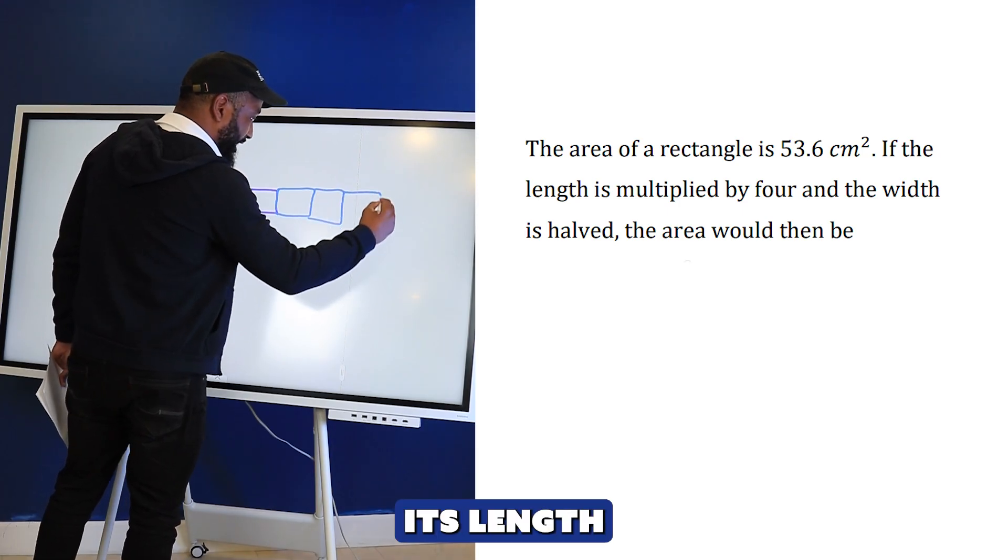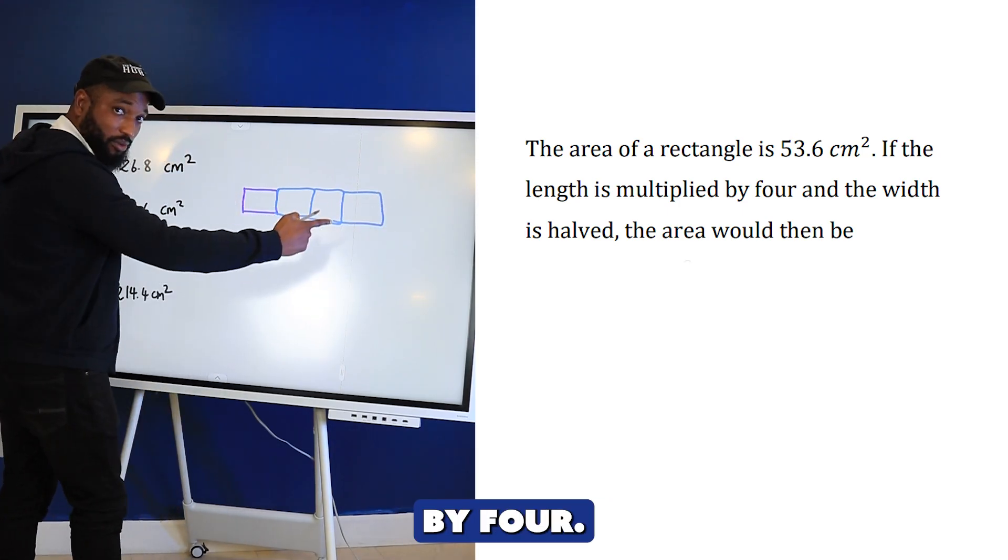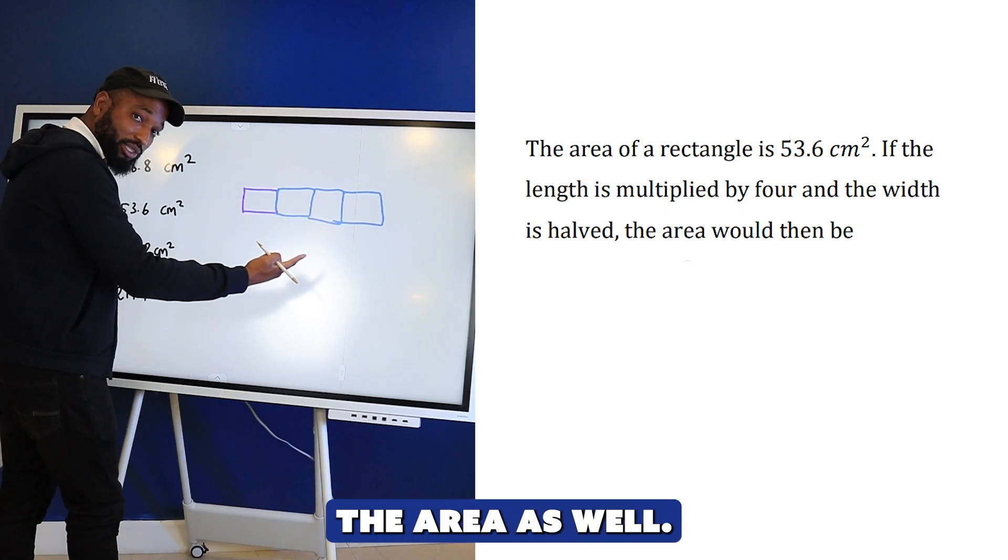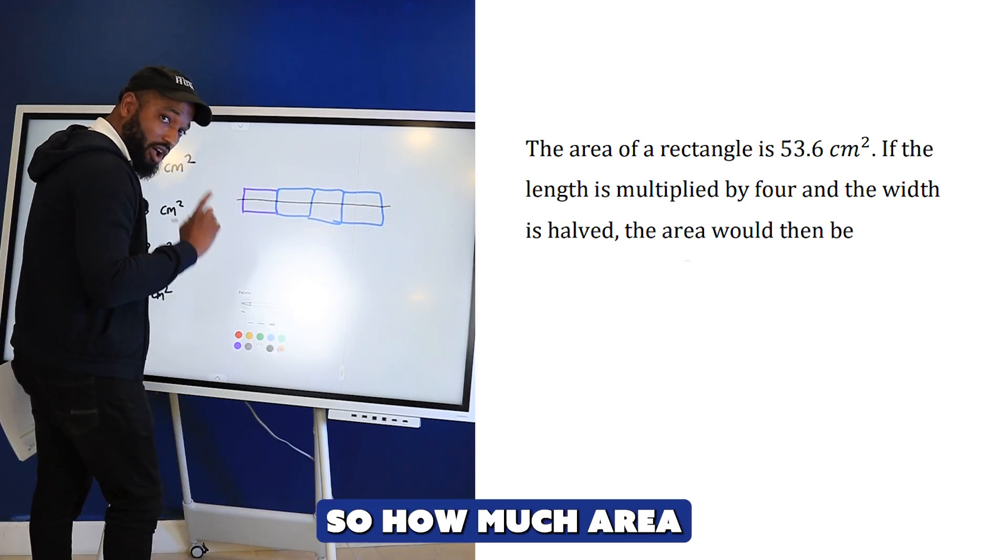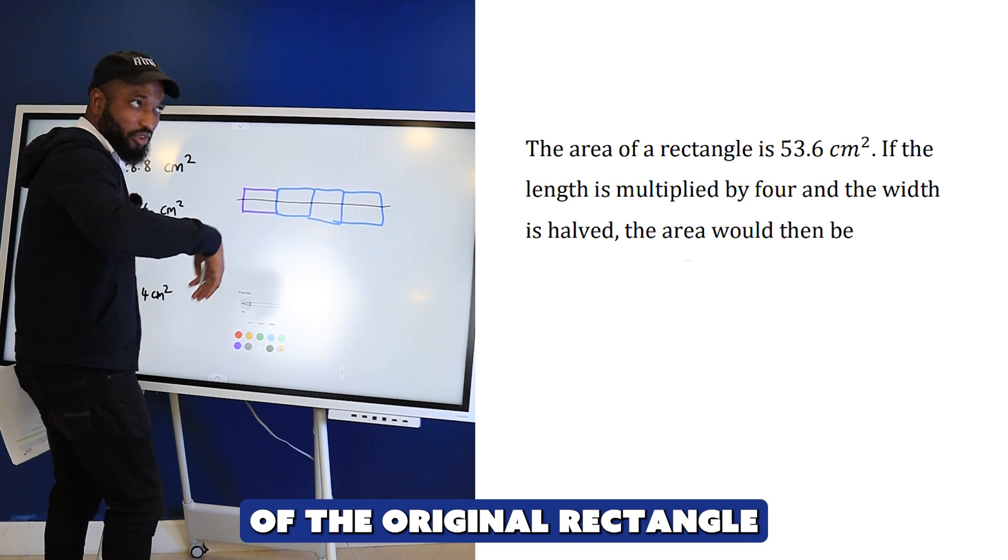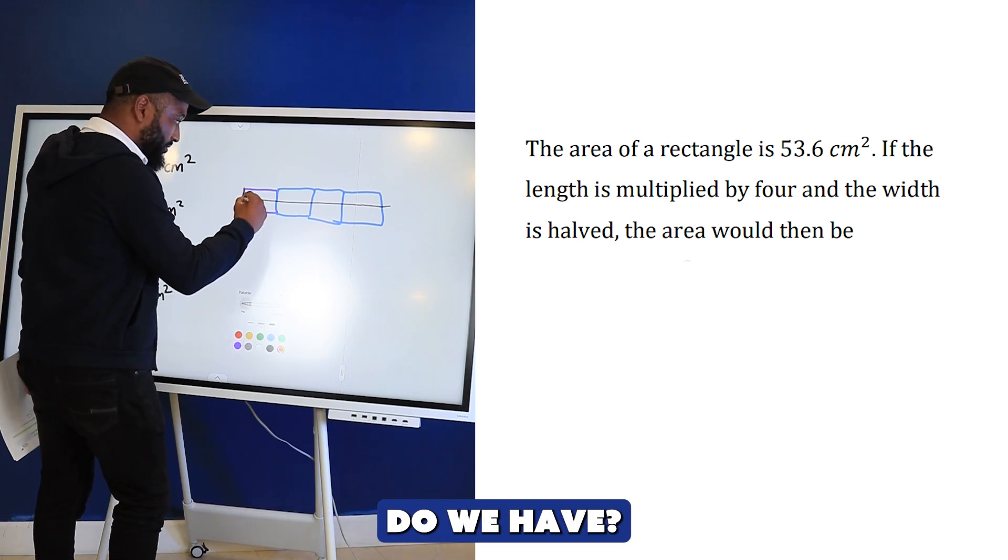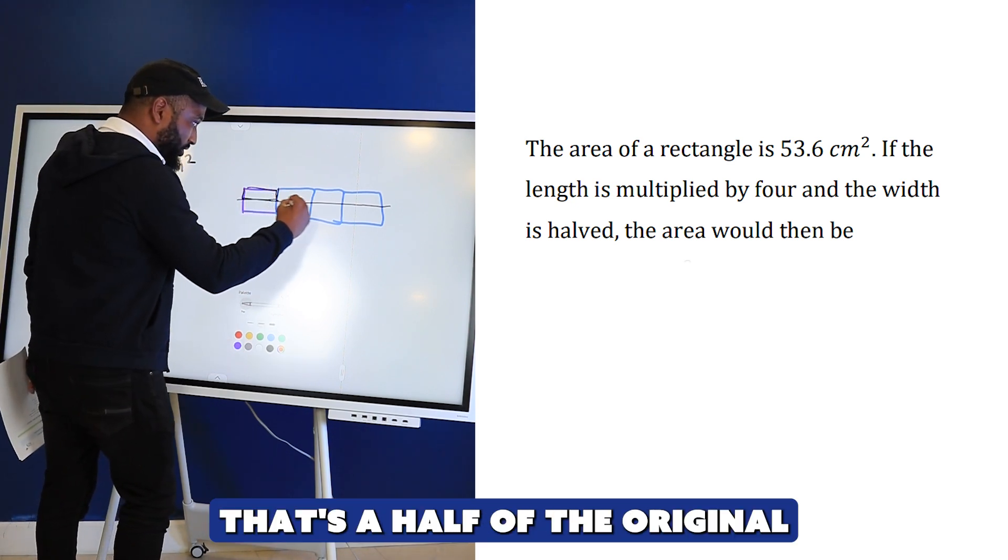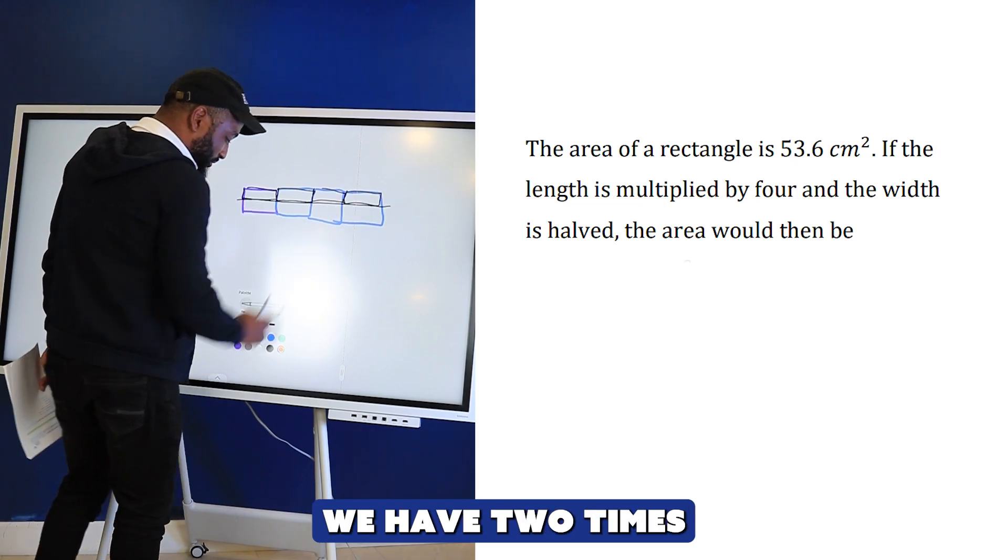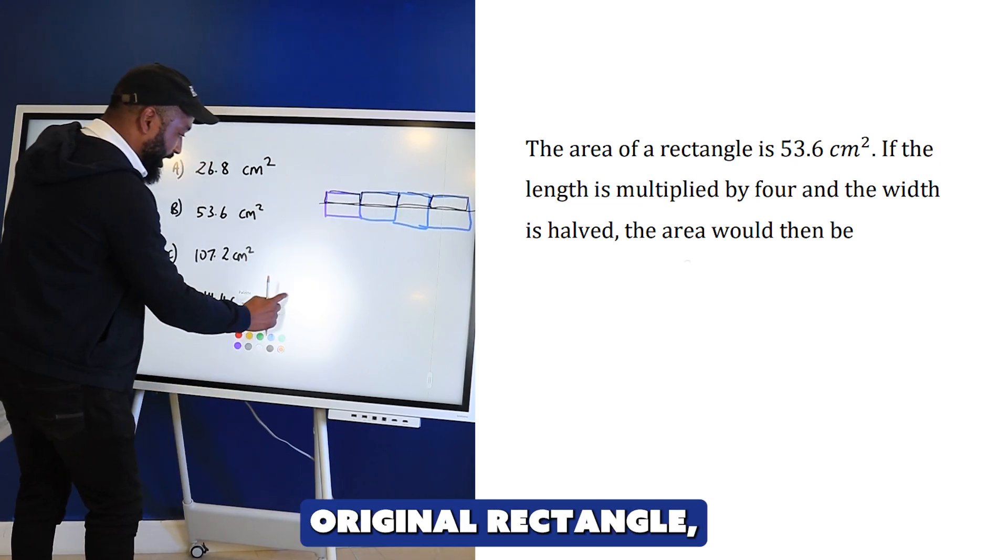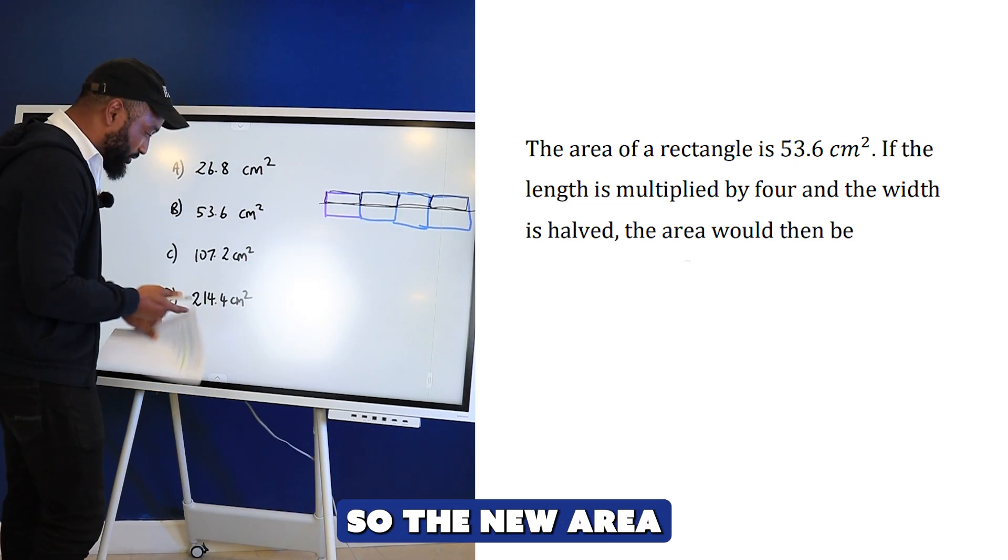Original rectangle - multiply its length by four, so now we have four times the area. But we halve the width, so that's half of the original. Another half and another half make two times the area of the original rectangle, which was 53.6.